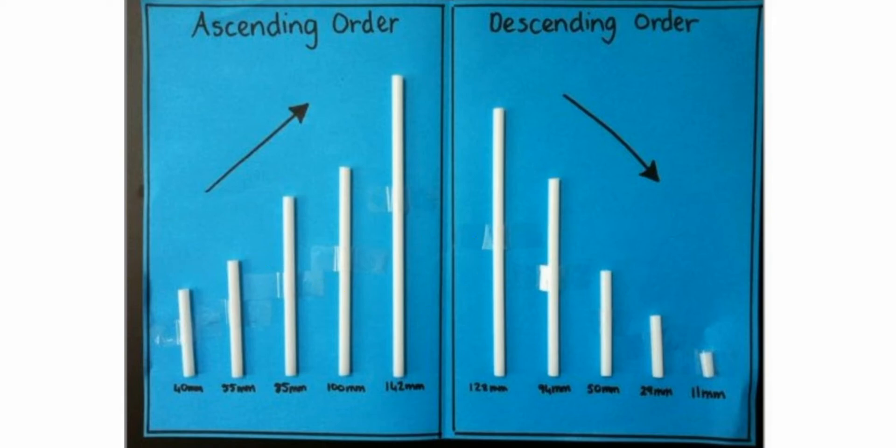We need to understand what order numbers follow — increasing order को समझना होता है। For example, कौनसा number comparatively किसी से कितना बड़ा है या किसी से कितना छोटा है। इस comparative analysis को समझने के लिए हम ascending और descending का concept पढ़ते हैं। आपके सामने जो pictorial display है उसके अंदर दोनों concepts रखे जाते हैं।